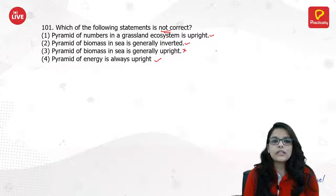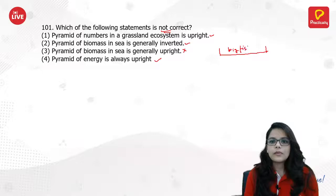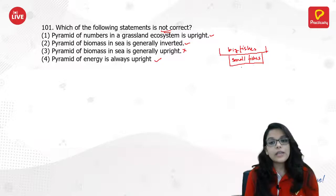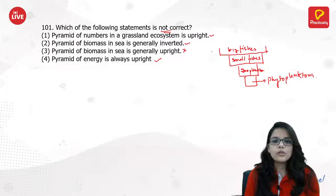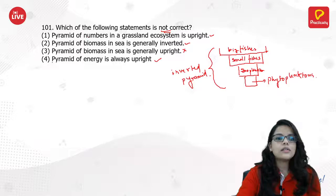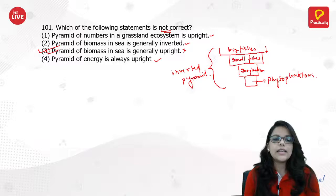The pyramid of biomass in sea is inverted. It looks like: big fishes are the tertiary consumers, small fishes are secondary consumers, then zooplanktons, then phytoplanktons which are the producers. So it is an inverted pyramid. The answer is 'pyramid of biomass in sea is generally upright' — no, it is inverted.